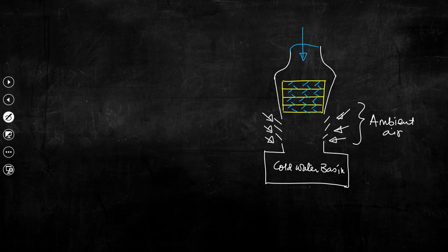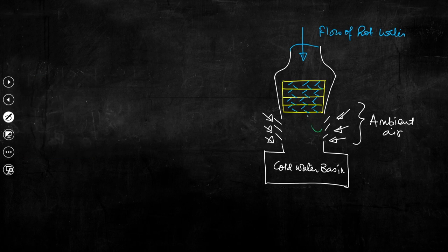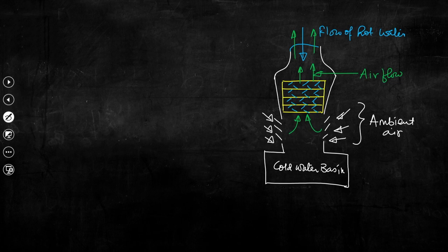The flow direction of water is downward, and air flow will be in the opposite direction — upward — and this air will eventually go out. We have discussed both natural draft and mechanical draft towers in the last class.